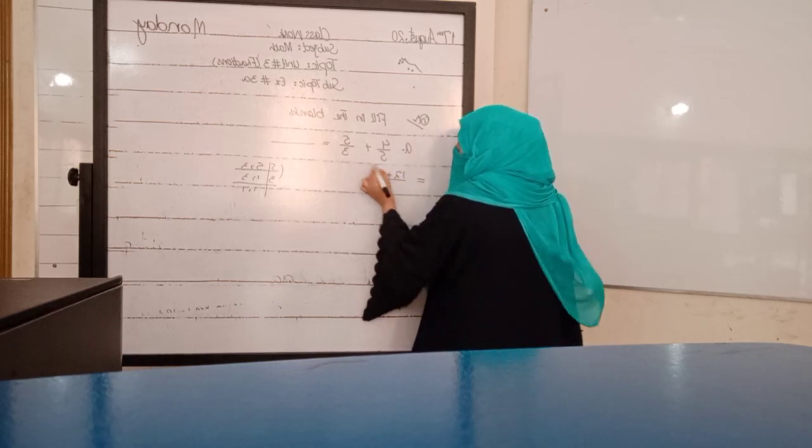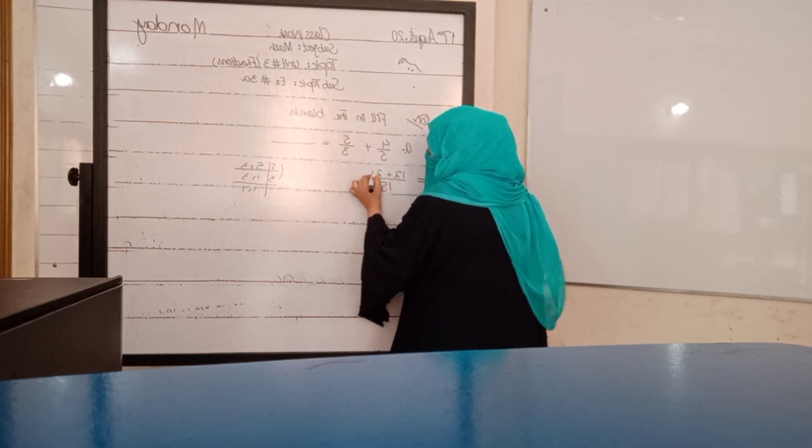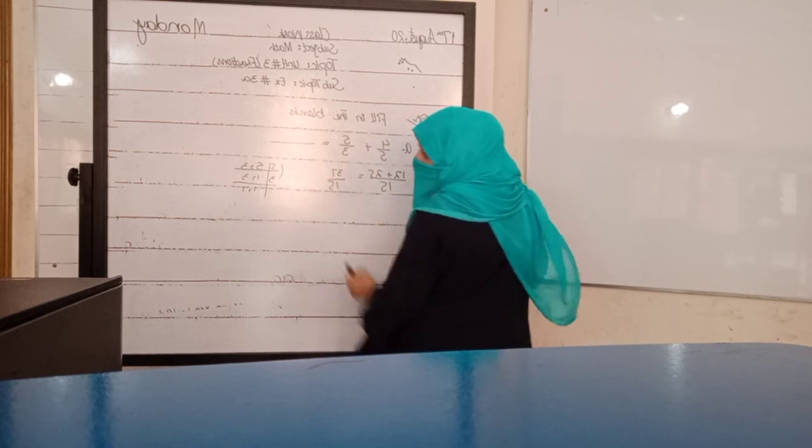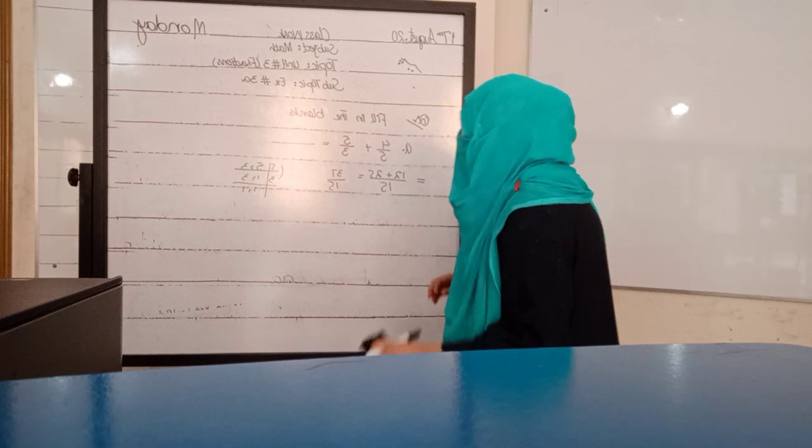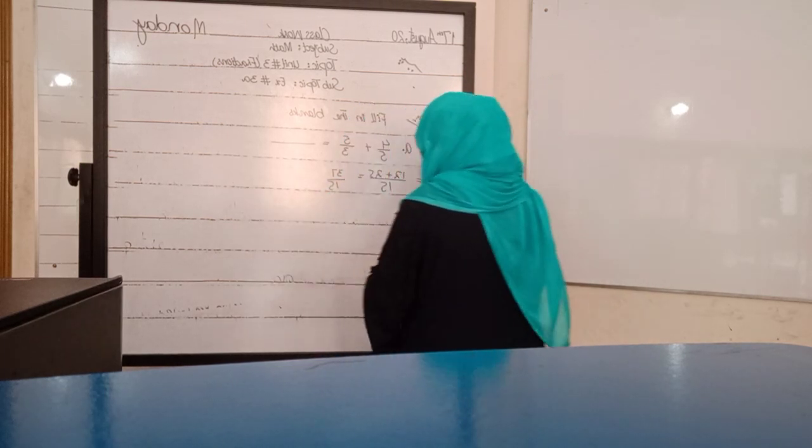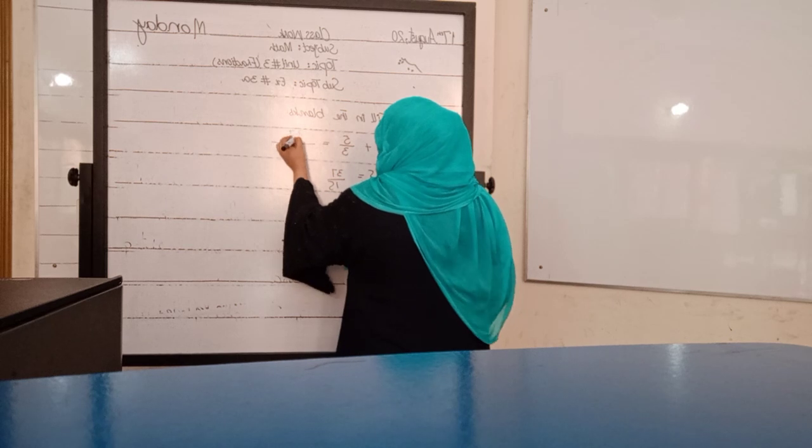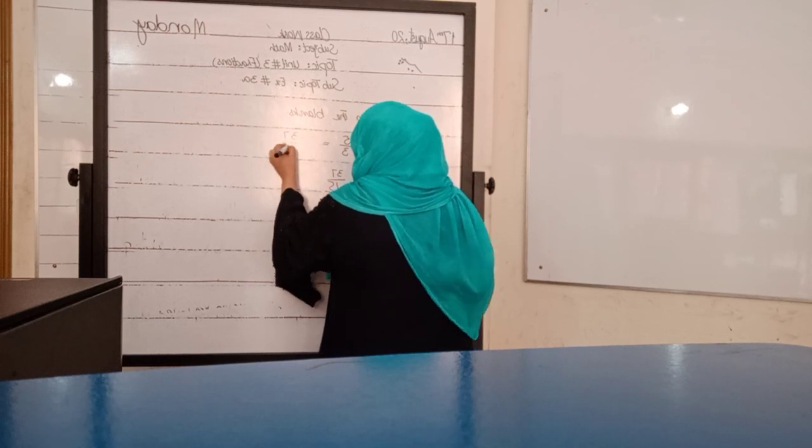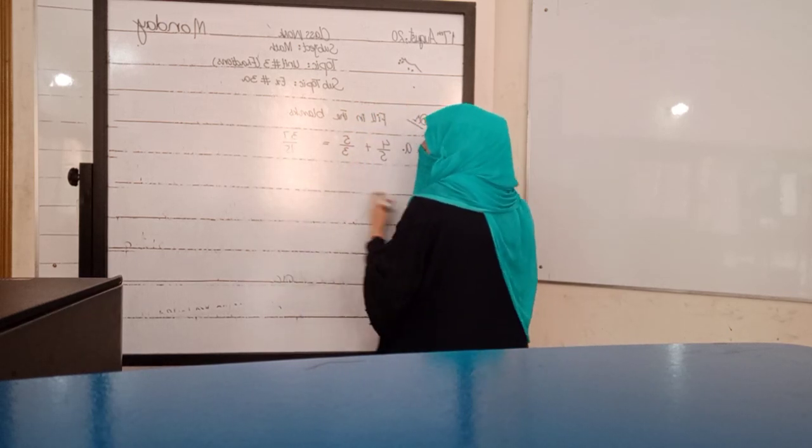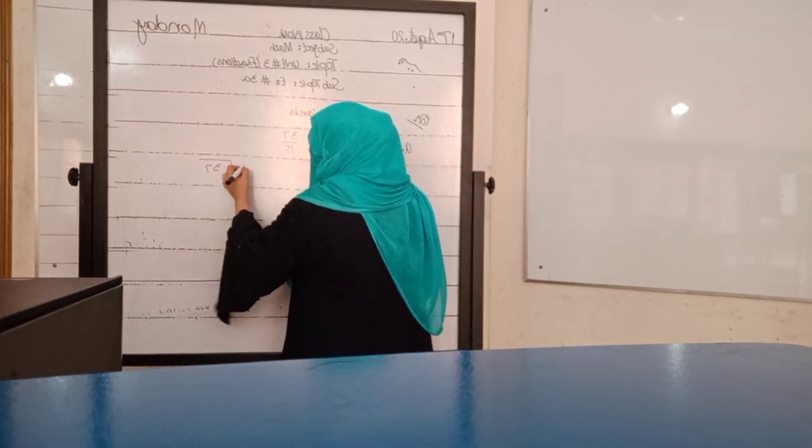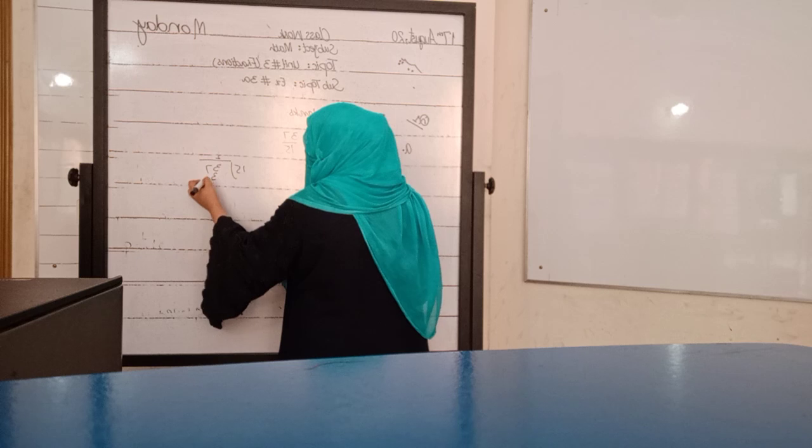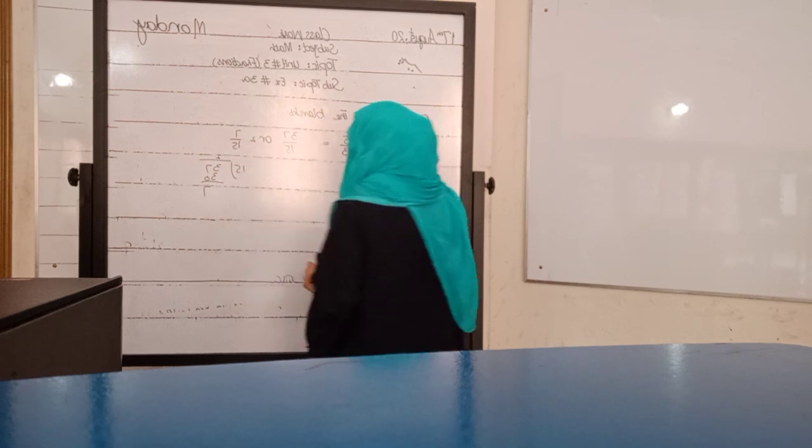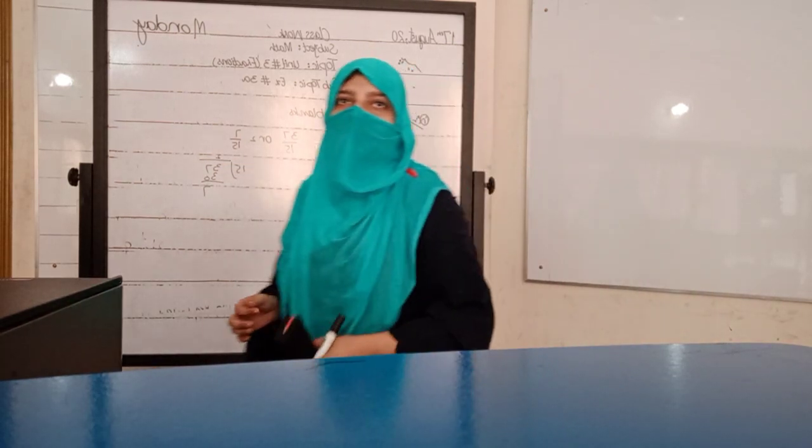37 over 15. First fill up is 37 over 15. Now we can also divide. For example, 37, 15 into 30 is 2, remainder 7. So 2 and 7 over 15. This is the answer of your first fill up.